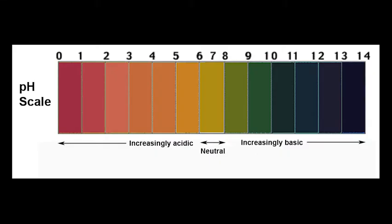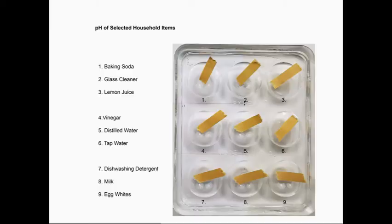The pH scale is a logarithmic scale. Above 7, each pH value in sequence is 10 times more acidic than the next value. So pH 0 is 10 times more acidic than pH 1, and 100 times more acidic than pH 2. Below 7, each whole pH value in sequence is 10 times more basic or alkaline than the lower value. Hence pH 14 is 10 times more alkaline than pH 13, and 100 times more alkaline than pH 12.